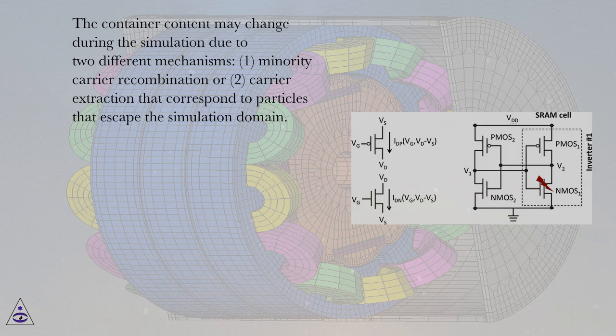The container content may change during the simulation due to two different mechanisms: 1, minority carrier recombination or, 2, carrier extraction that correspond to particles that escape the simulation domain.